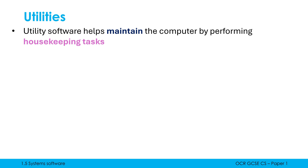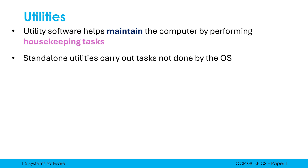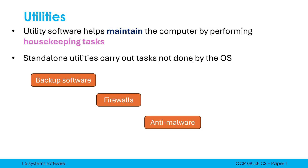An operating system does a lot of these maintenance jobs — a huge amount of stuff to help the computer run smoothly — but you might also install standalone utilities, which are separate programs made by different companies that carry out tasks not done by your operating system. There are loads of examples: backup software would be one. Firewalls and anti-malware, although often built into an OS, could be downloaded as standalone utilities. Converting file types would also be a utility.